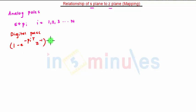Let us define the analog poles. Analog poles are given by the roots of the terms s+pi where i ranges from 1, 2, 3 to n. The digital poles are given by the roots of the term (1-e^(-pi*t)*z^(-1)), where i also ranges from 1 to n.